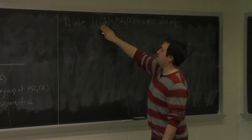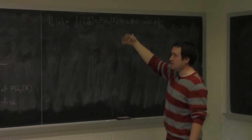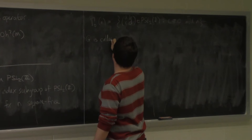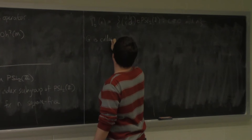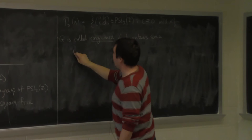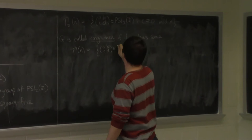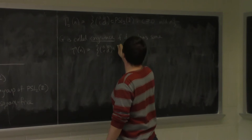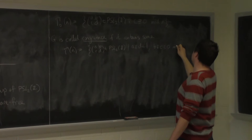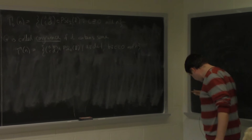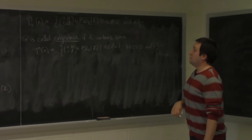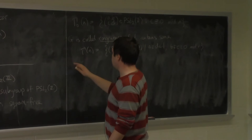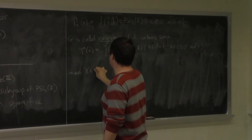These are sometimes called a type of congruence subgroup, because this is a congruence condition we're satisfying. In general, G is called congruence if it contains some Gamma(n), which is all matrices in PSL_2(Z) such that a and d are both congruent to 1 and b and c are both congruent to 0 mod n — in other words, the matrix is congruent to the identity mod n.